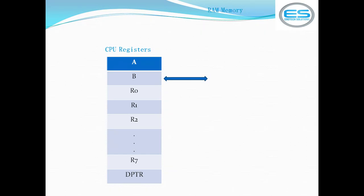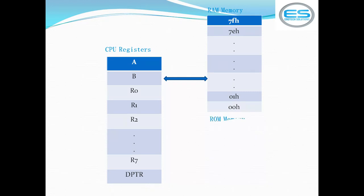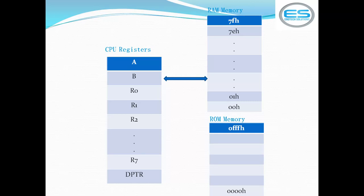The microcontroller provides different storage units: CPU registers, RAM memory, ROM memory, and a list of registers A, B, R0, R1, R2 up to R7. There are some standard registers including DPTR. These are the most popular registers you need to use for your data operations. If you want to save your data temporarily, you can use this list of registers from the 8051 controller. The RAM section is 128 bytes, with addresses from 00H to 7FH.